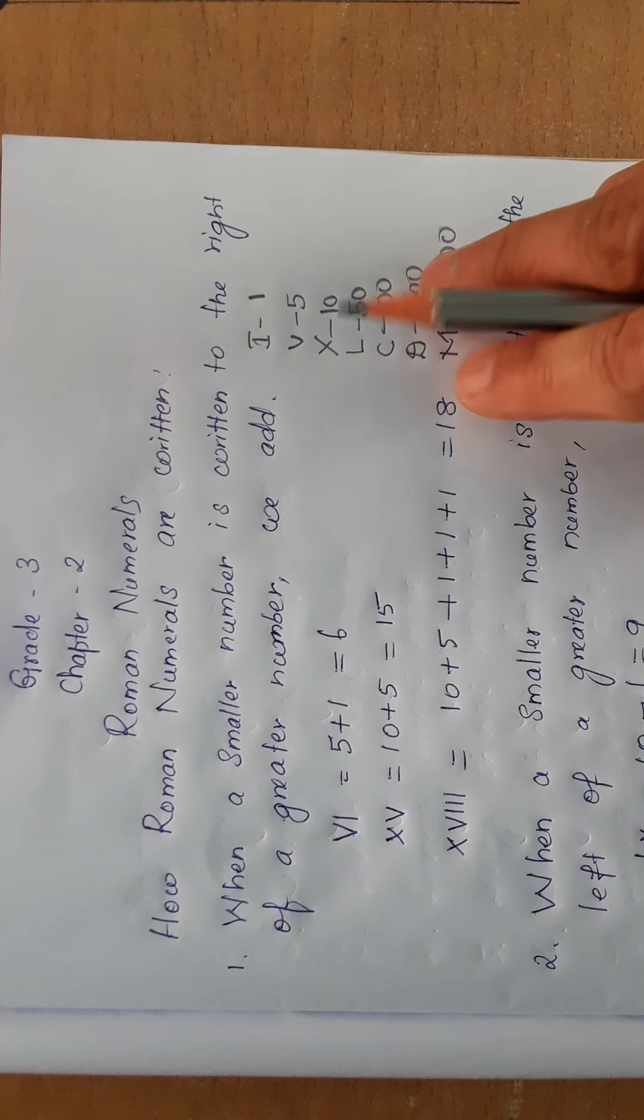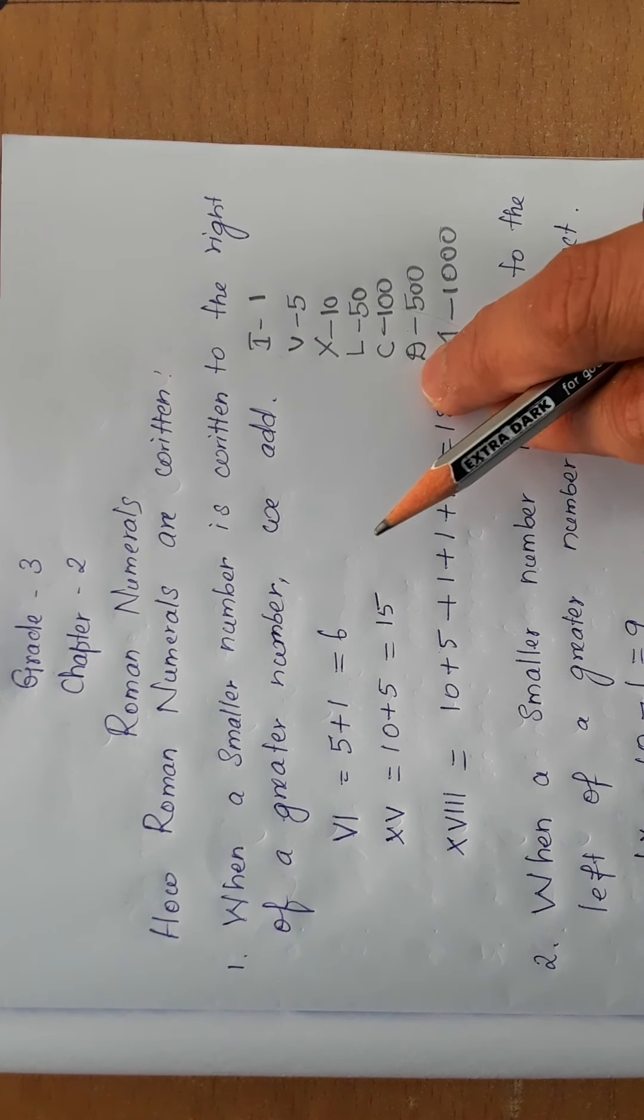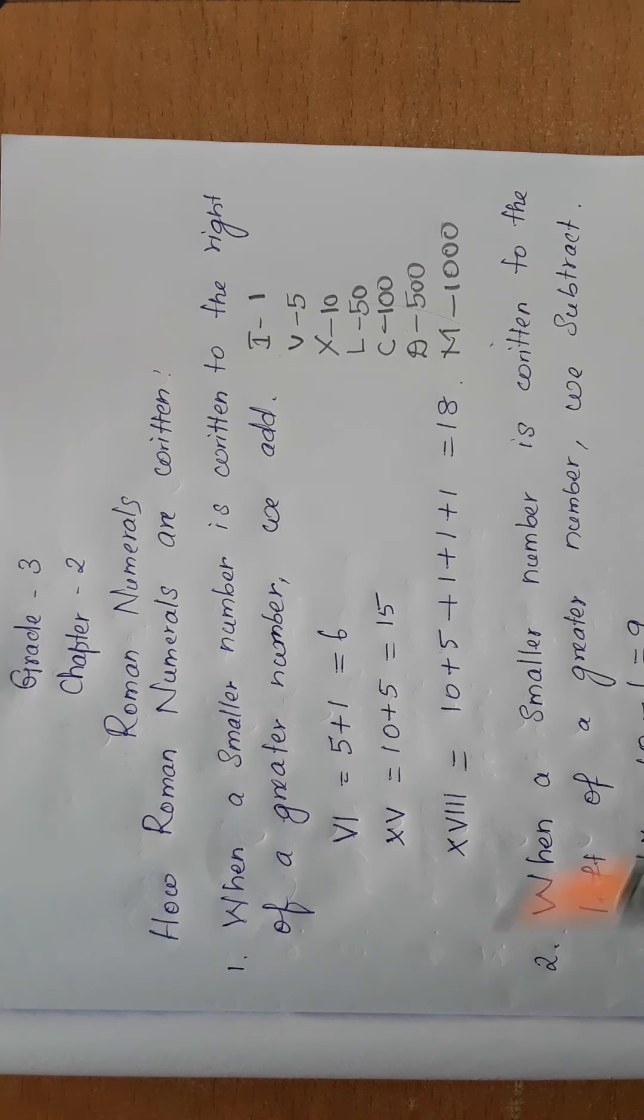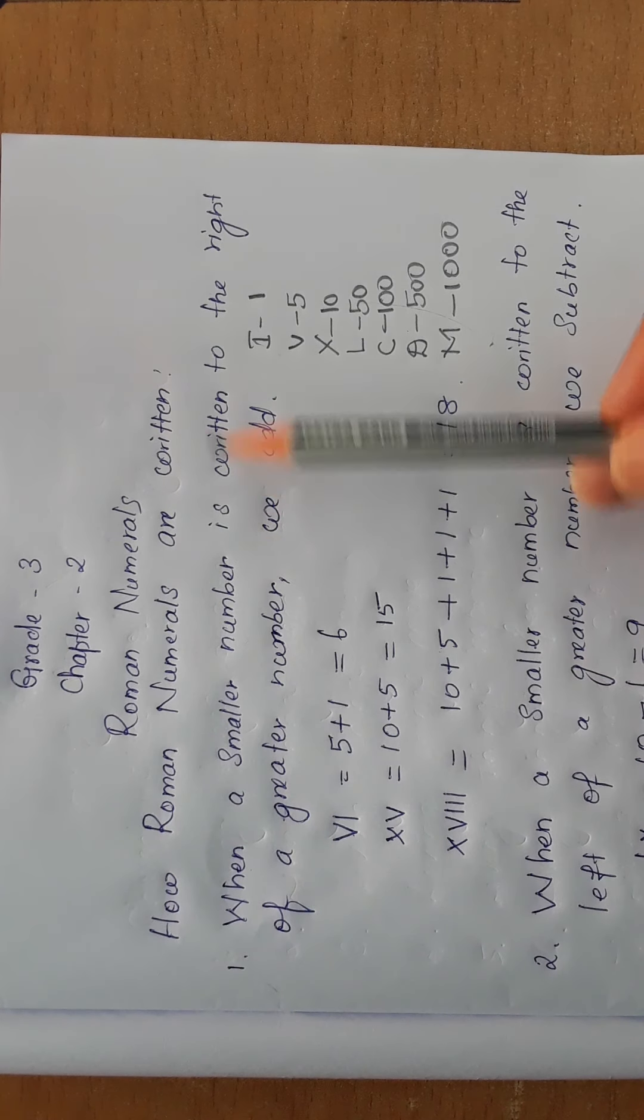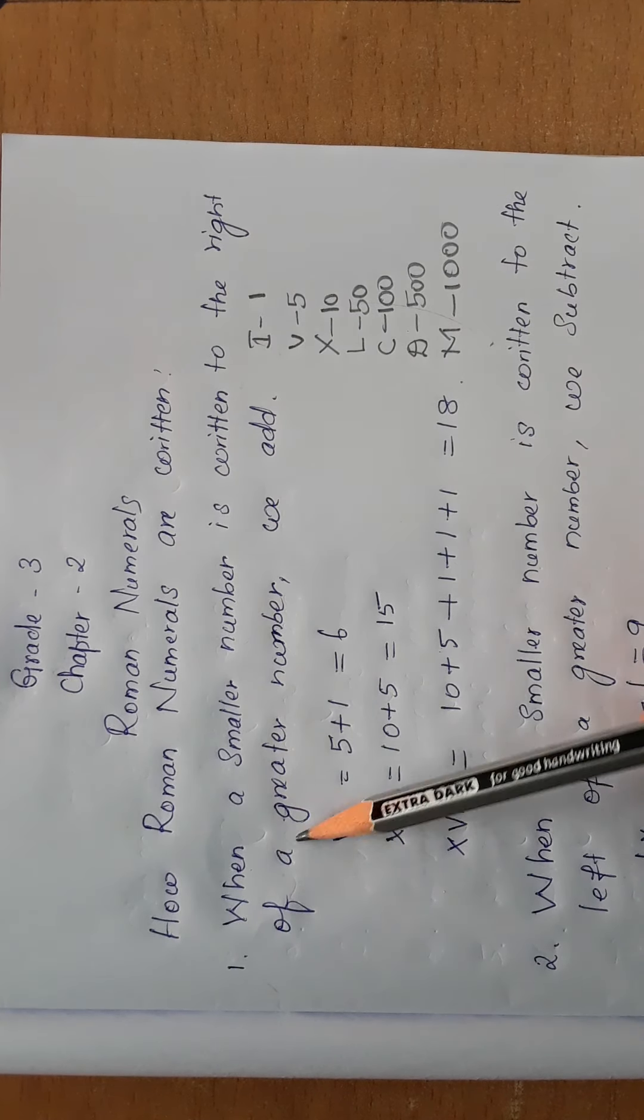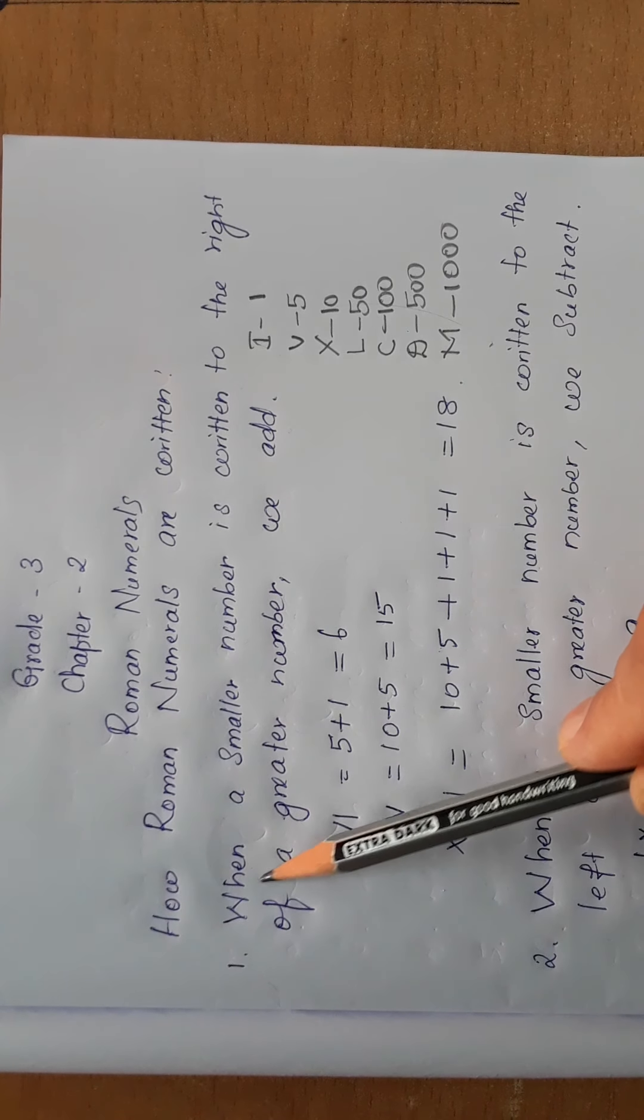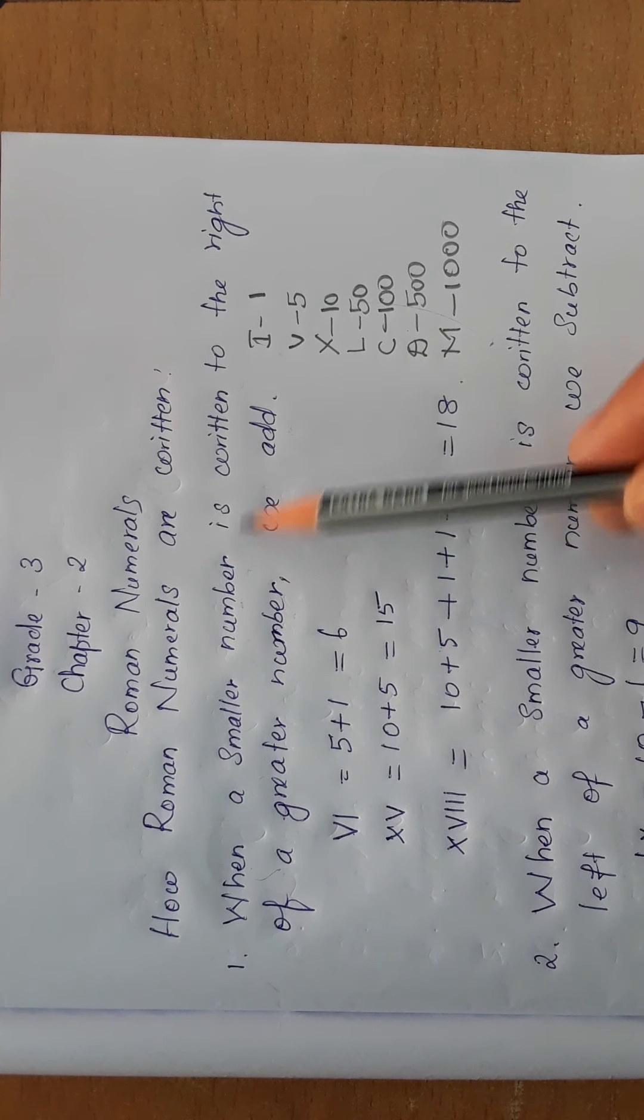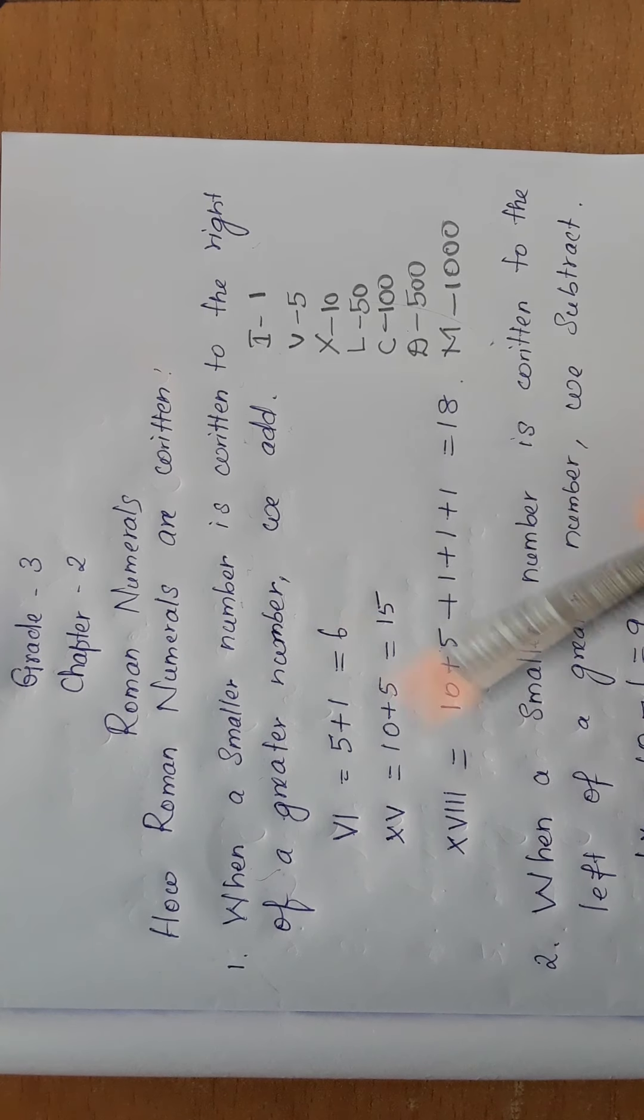Using these letters we will make the Roman numerals. Now see, what is the first rule? First one: when a smaller number is written to the right of a greater number, we add. When a smaller number is written to the right of a greater number, suppose we take this example.